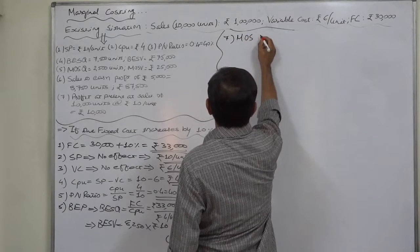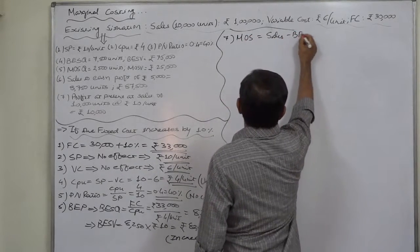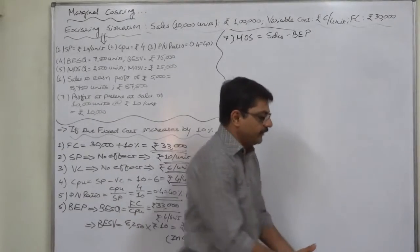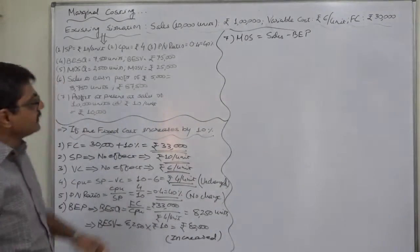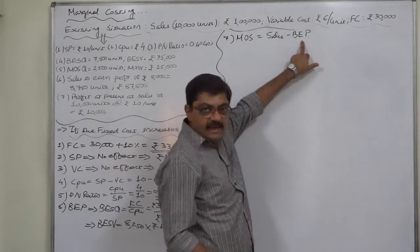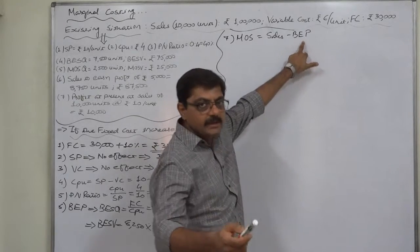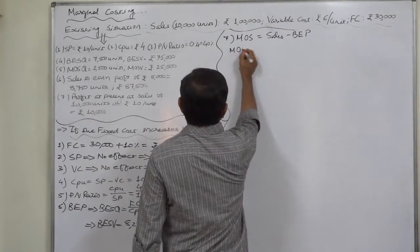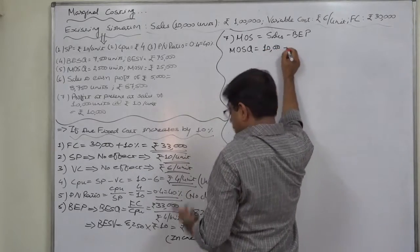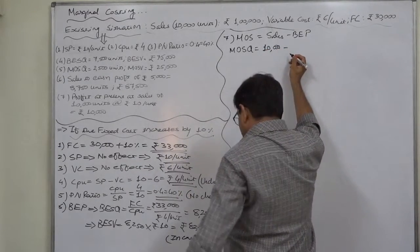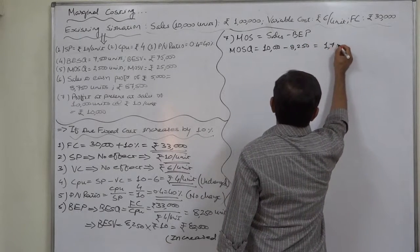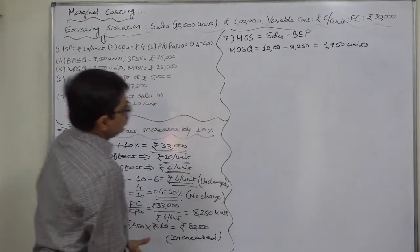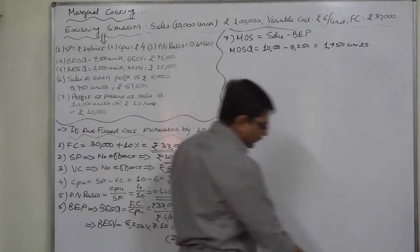Margin of safety, sales minus BEP. In calculating margin of safety, there is no direct role of the fixed cost or amount of fixed cost, but indirectly the fixed cost affects the margin of safety because fixed cost directly affects BEP and margin of safety is calculated through BEP. So margin of safety has to change whenever the fixed cost changes. Let us calculate margin of safety quantity: sales 10,000, changed BEP 8,250 units, so it is now 1,750 units. From 2,500 units, the margin of safety has decreased to 1,750 units.